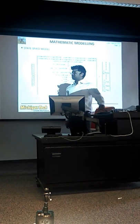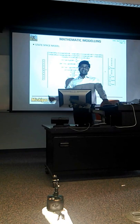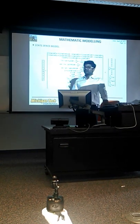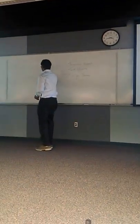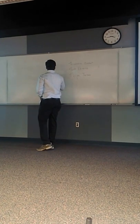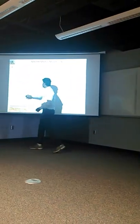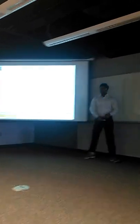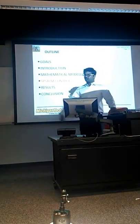This is the state space model which we worked on for around two months to derive, because it is not easy. It may seem simple in equation form but it is very difficult to derive. We put it in the form of x-dot = Ax + Du, where x is the state variable vector consisting of all state variables, and u is the input vector consisting of thrust force and three torques.